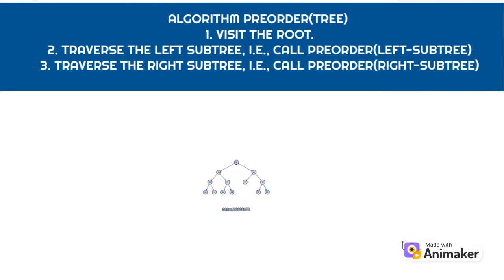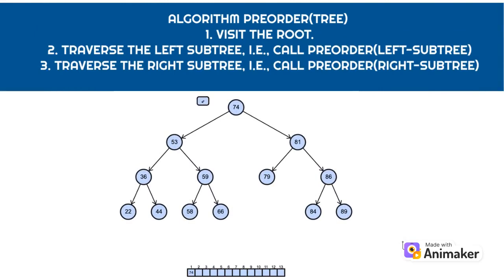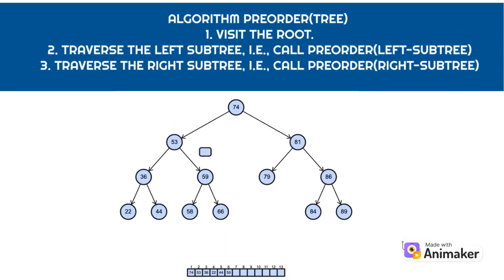Algorithm: pre-order tree. 1. Visit the root. 2. Traverse the left subtree. 3. Traverse the right subtree.